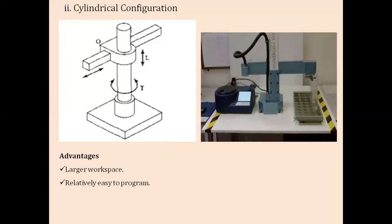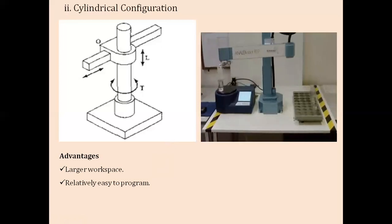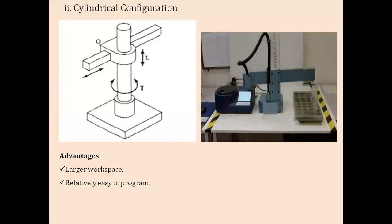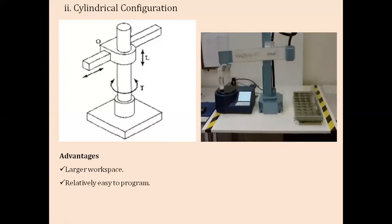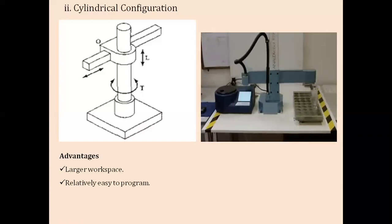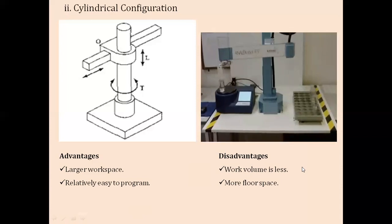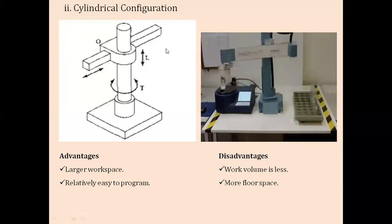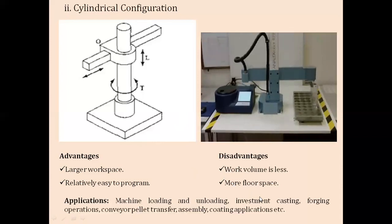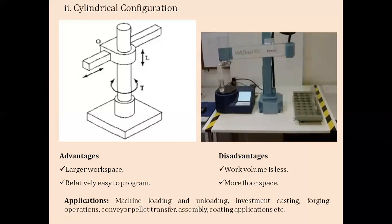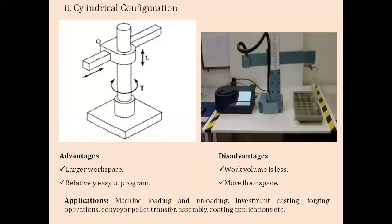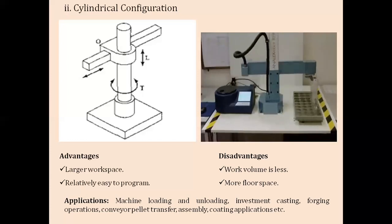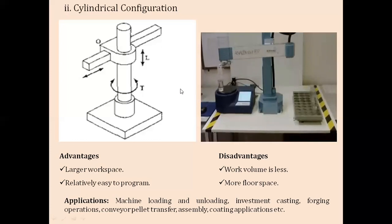The advantages of the cylindrical configuration are that it has a relatively larger workspace compared to the Cartesian configuration. It is easier to program due to the T-joint rotation, and it has high load-carrying capacity. Disadvantages include a lesser workspace volume compared to the Cartesian and more floor space occupied. Applications include loading and unloading, forging, assembly, and coating operations.